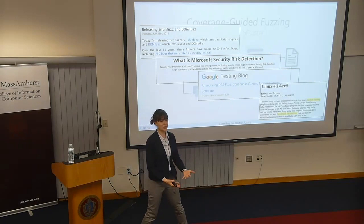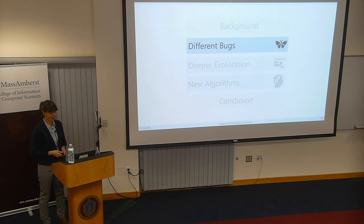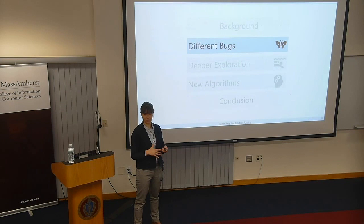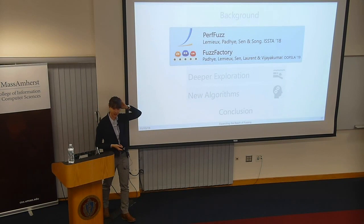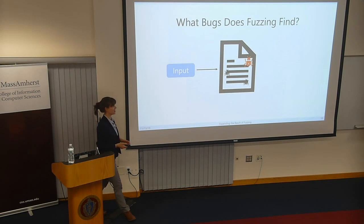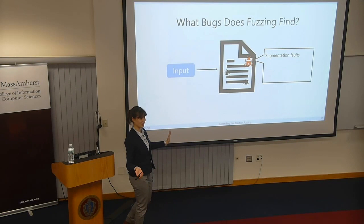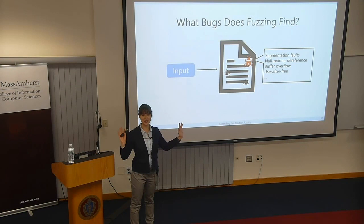This coverage-guided fuzzing algorithm made a big splash in automated test generation, and that's the starting point of where I wanted to keep exploring. So the first thing I'm going to talk about is we had a few projects where we looked at these algorithms, found they found certain kinds of bugs, and were wondering if we could widen the scope to different kinds of inputs. This is some joint work with me and my colleague Rohan Patye at Berkeley.